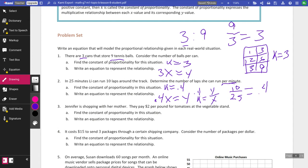Jennifer is shopping with her mother. They pay $2 per pound for tomatoes. And remember, the per goes on the bottom. So $2 per pound. 2 over 1, that just means 2. So k equals 2. Write an equation. 2x equals y. Or 2 equals y over x. Same thing.